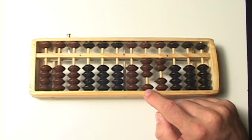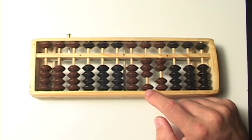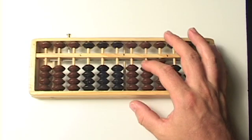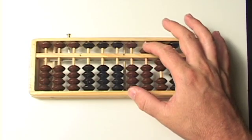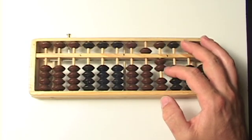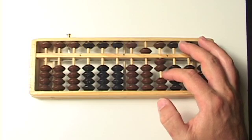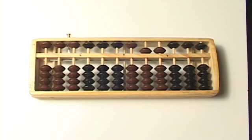So 32 plus 23. Well, so I need to add a 2 here. Oh, I'm going to have to use a complimentary number here. So the compliment to 2 is 3, which means I take away 3, slide down the 5. And I need to add 3 here. The compliment to 3 is 2. And I slide down the 5. 32 plus 23 is 55.